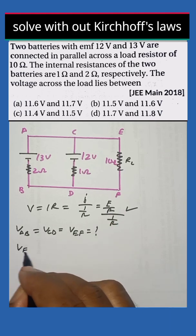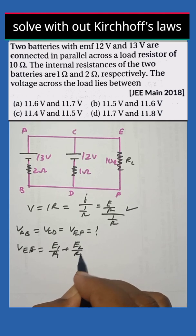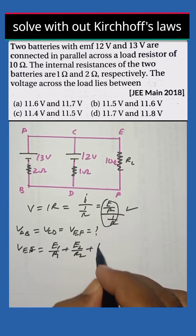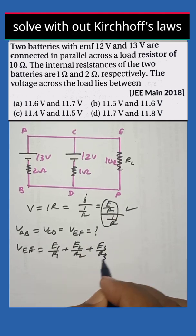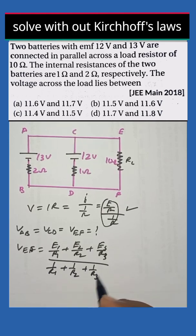So voltage across EF you want, which is said to be load voltage, that can be taken as E1 by R1 plus E2 by R2, I use this concept here, plus E3 by R3, whole divided by 1 by R1 plus 1 by R2 plus 1 by R3.